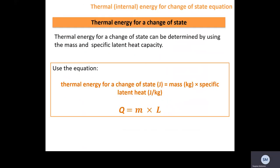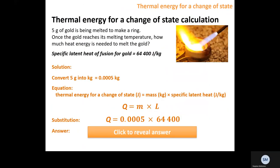Thermal energy for a change of state can be determined using the mass and specific latent heat. The equation is Q = mL, where L is the specific latent heat.